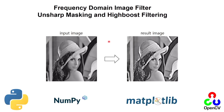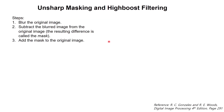Hello everybody, welcome to the Python Everyday channel. In this video we will learn how to do image sharpening using unsharp masking and high-boost filtering. According to the digital image processing textbook, unsharp masking and high-boost filtering has three steps.